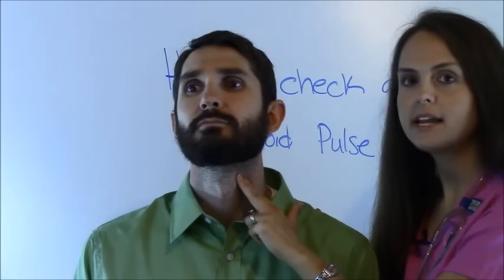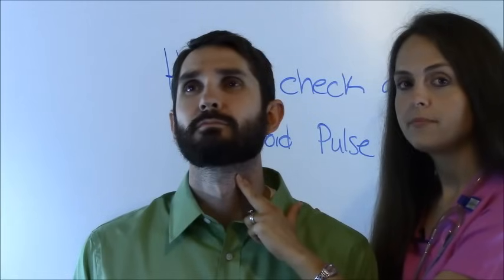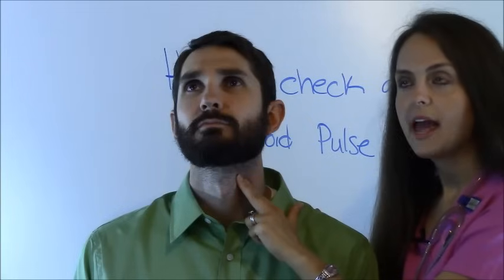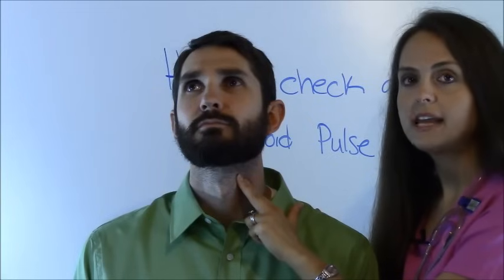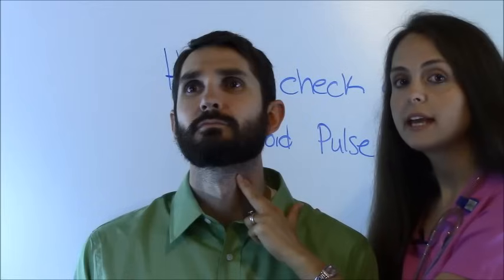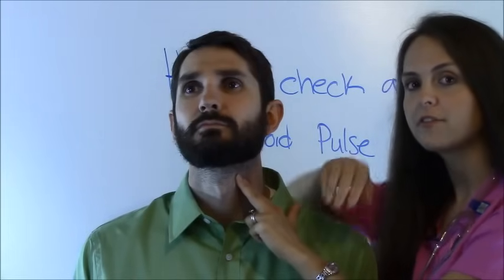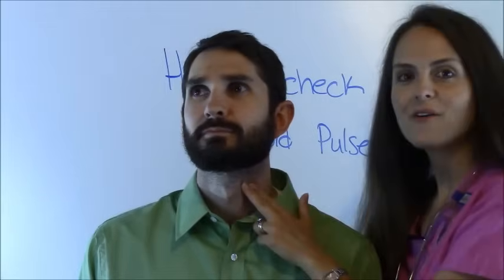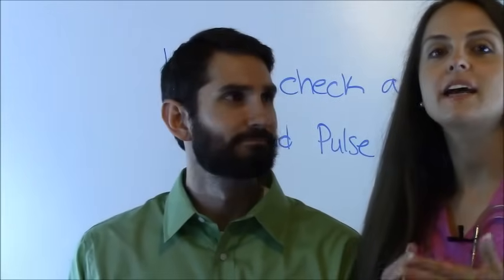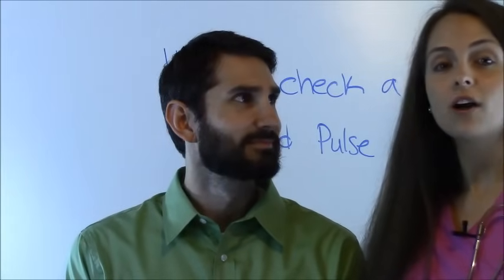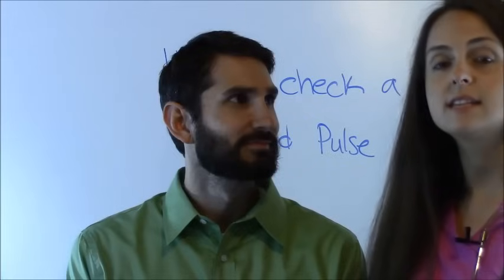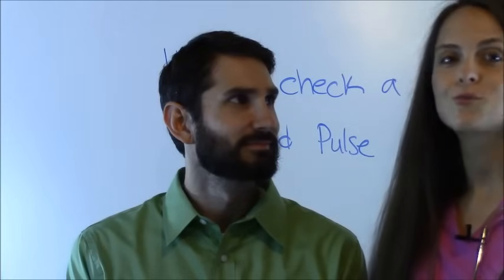I'm noting the rhythm and his rhythm is regular, and then I'm noting the strength — it's strong. Since it's regular, I'm going to count it for 30 seconds and multiply that by 2. I got 30, so 30 times 2 is 60 — that is his heart rate. Whenever I document, I'll put 60, strong, and regular.